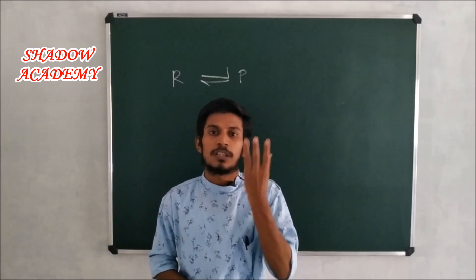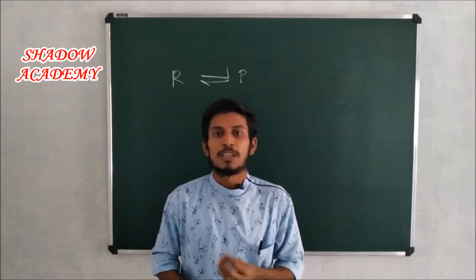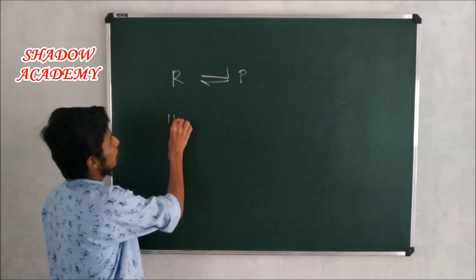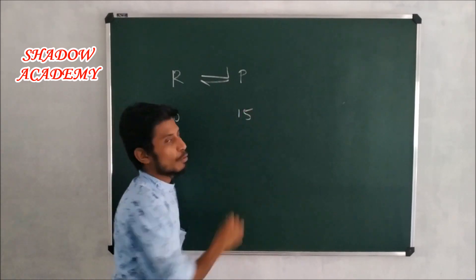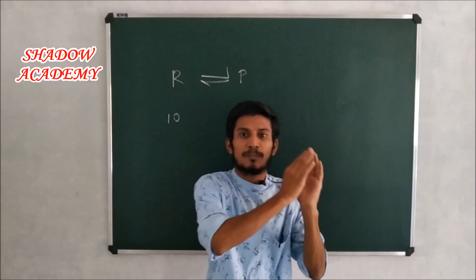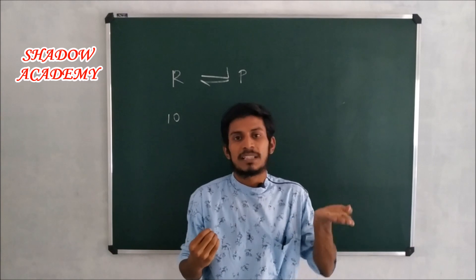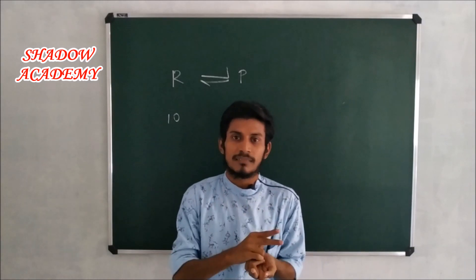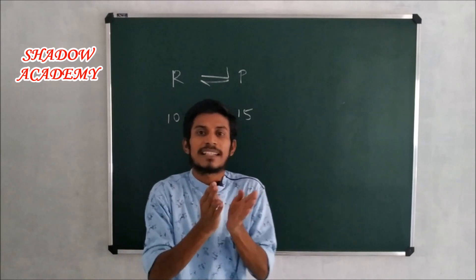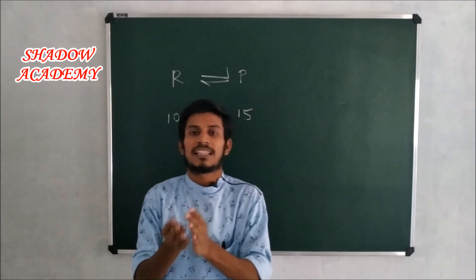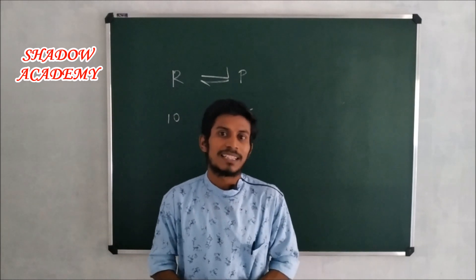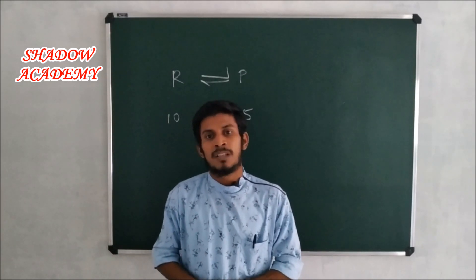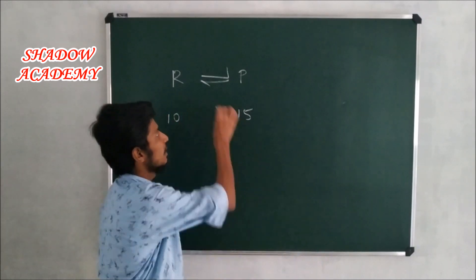For example, here we have 10 reactants and 15 products. Here we have 2 reactants and products. The amount of reactants and the amount of products — reactants and products proceed at one rate and speed. This is the dynamic equilibrium. This is the condition of the reactants and products: that is the rate.